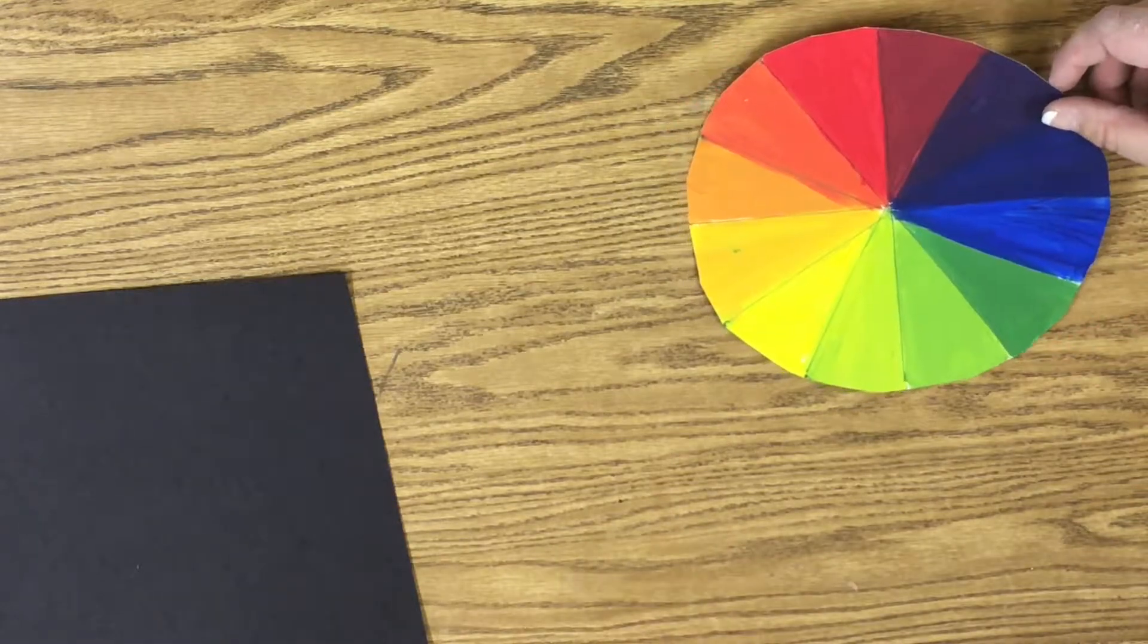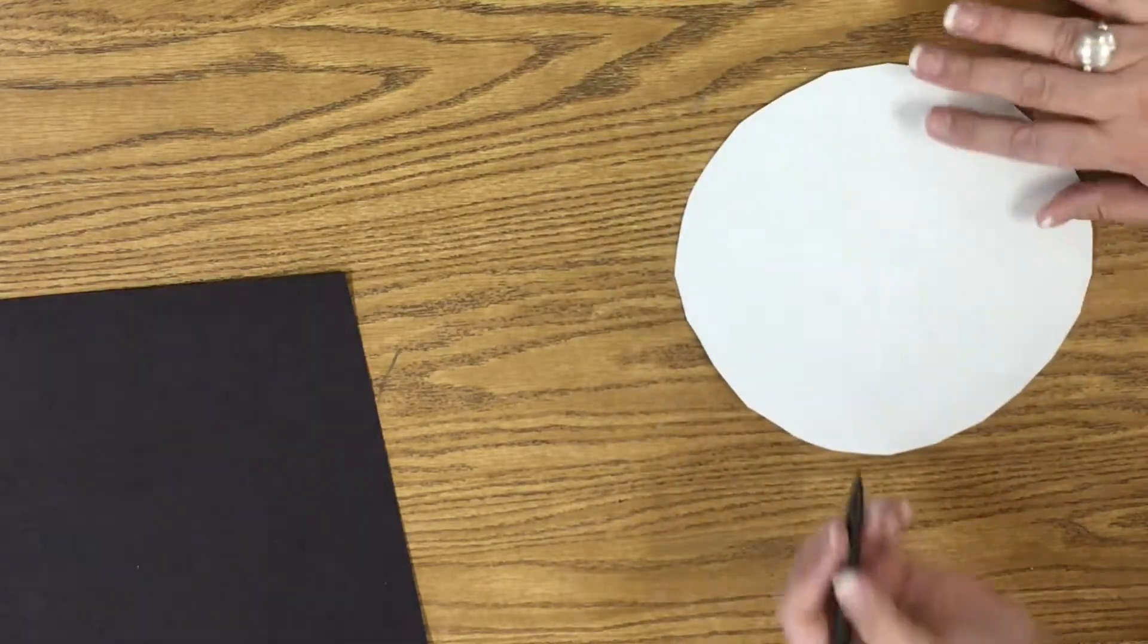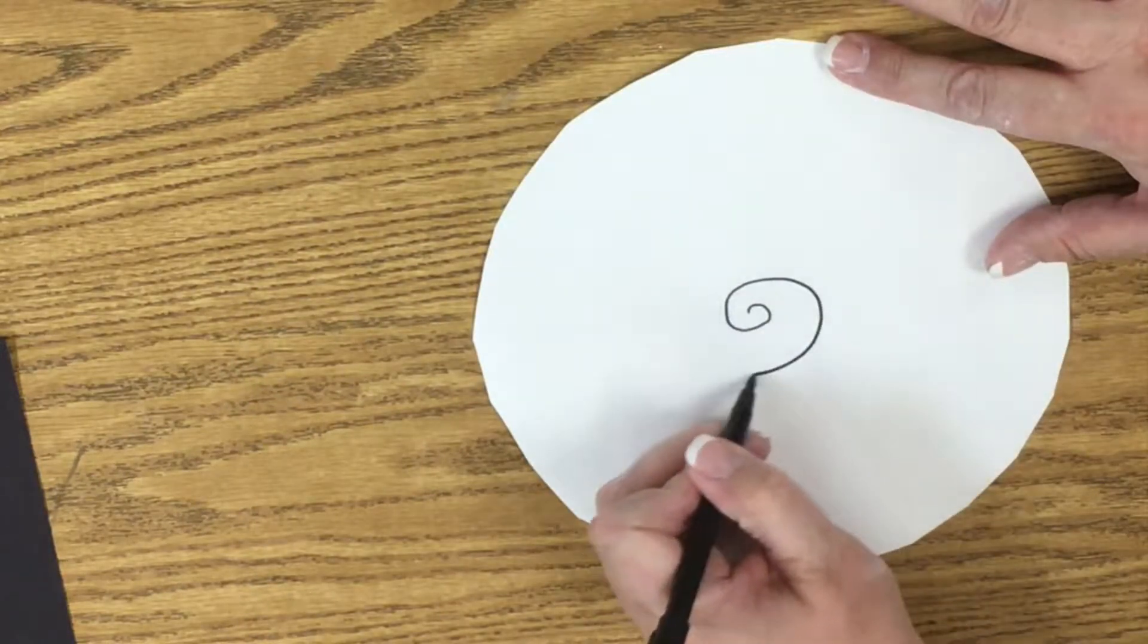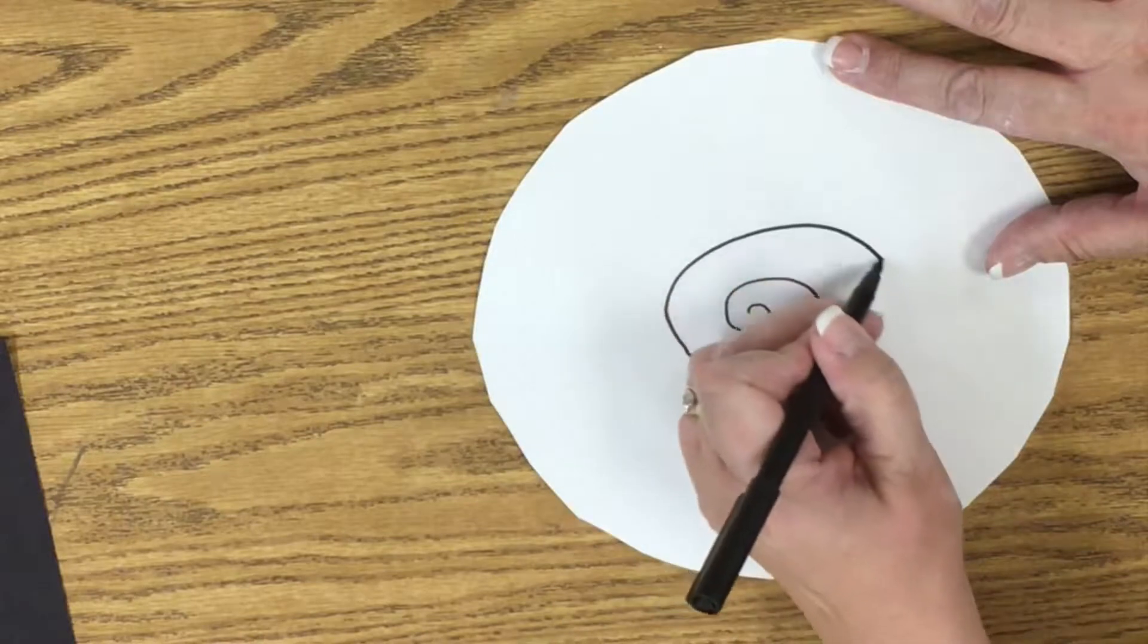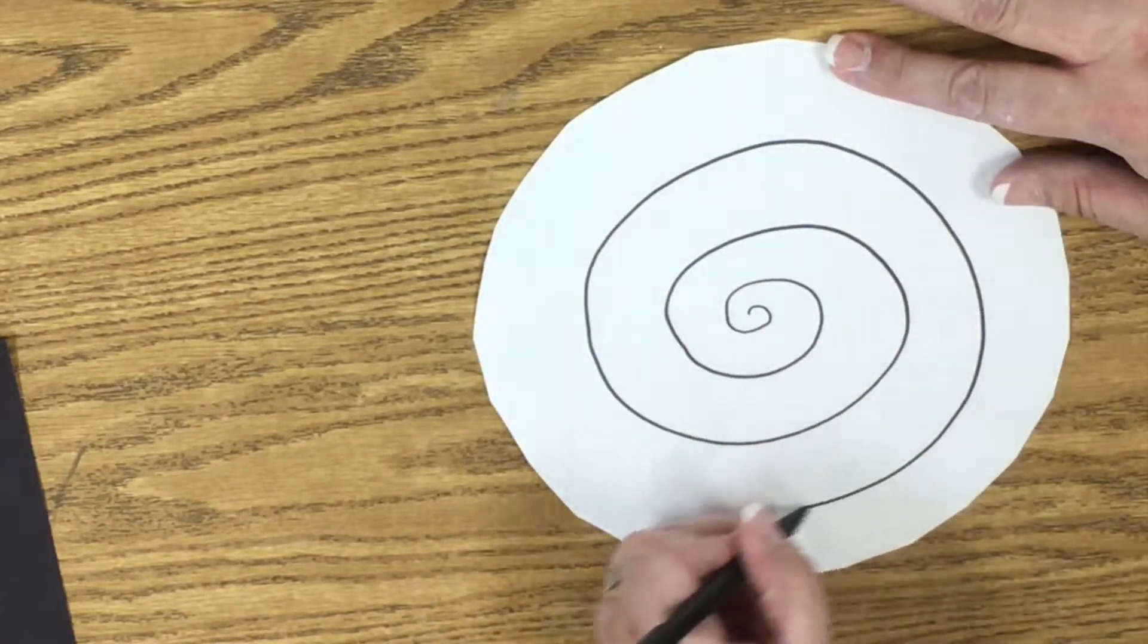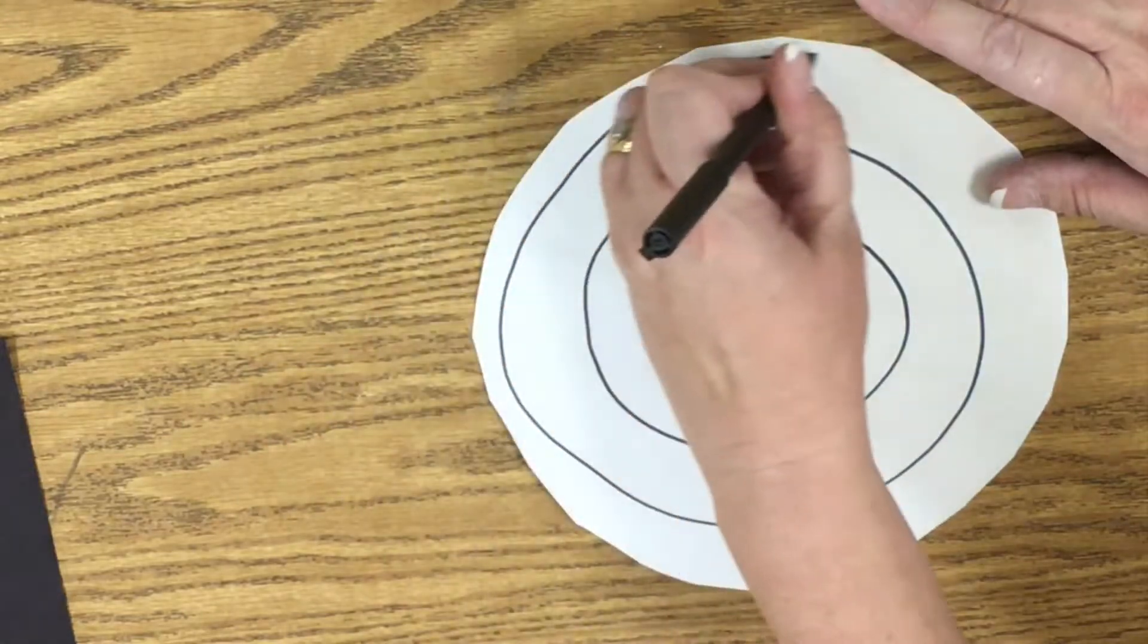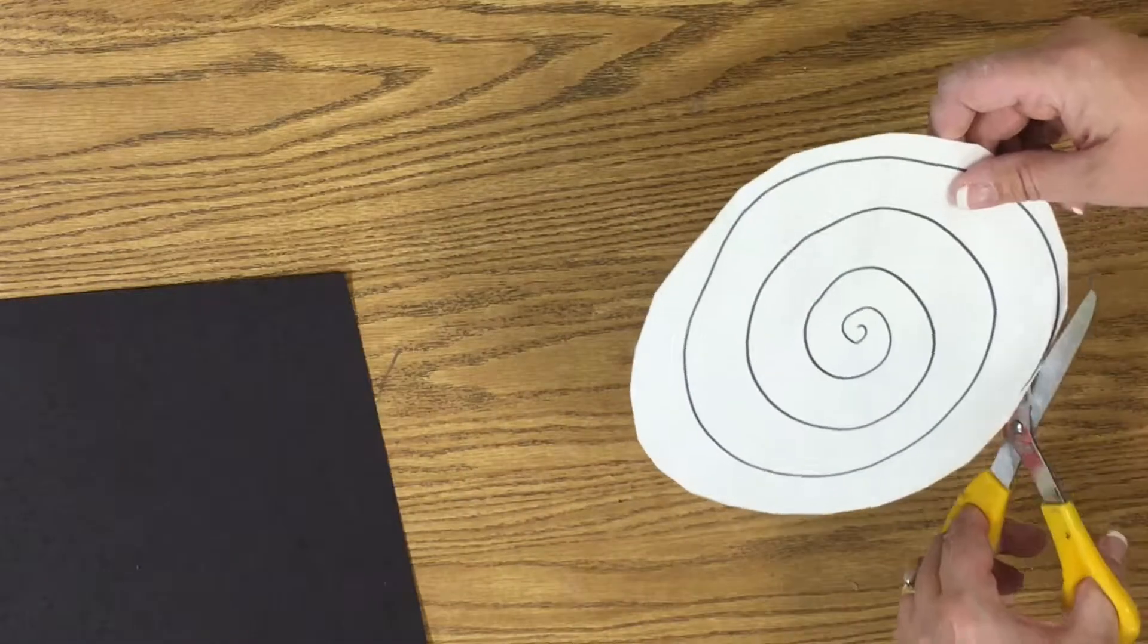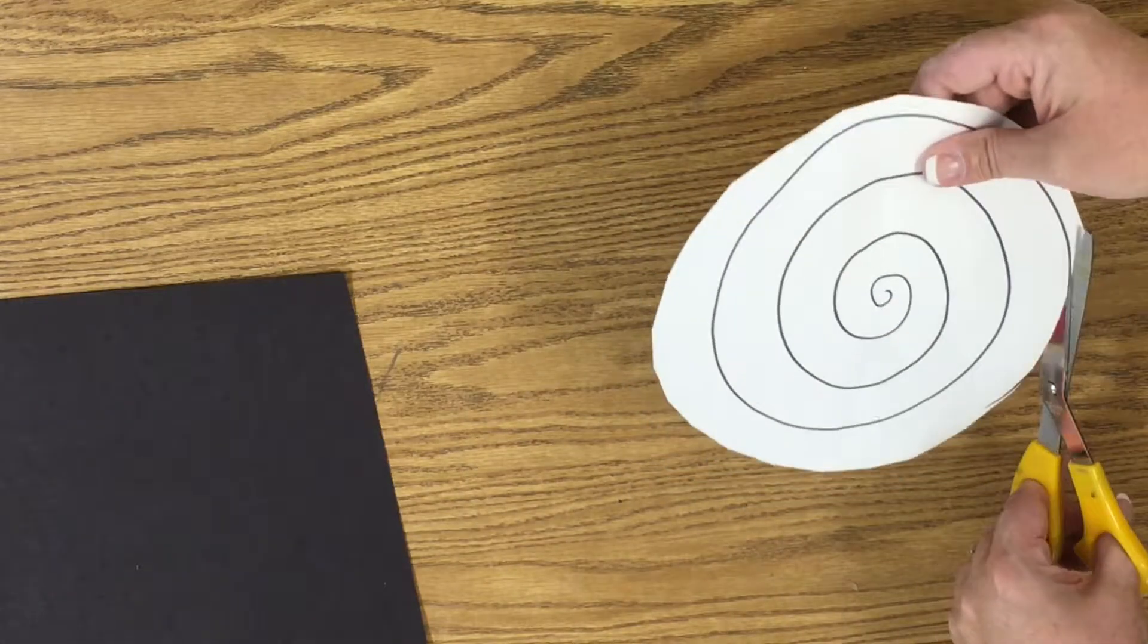We're going to flip our color wheel over and draw a spiral that gets bigger as it goes to the edge. Then we are going to cut that spiral.